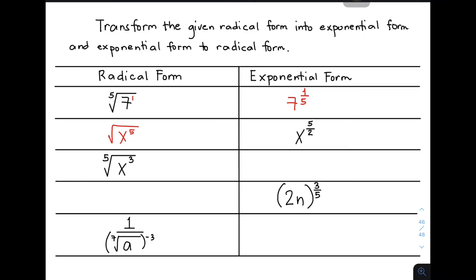You can pause the video and convert item number 3, which is the fifth root of x cubed. For item number 3, the radicand x will be the base of your exponential form. This index 5 will become the denominator of the exponent and this exponent 3 will be the numerator of the exponent. Therefore, the exponential form is x raised to 3 over 5.